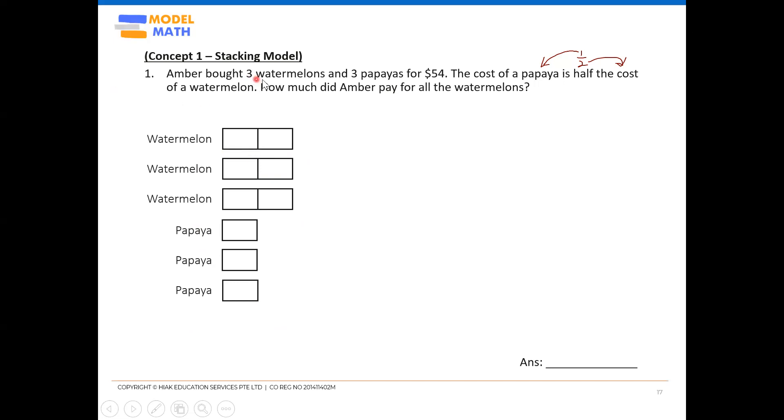Now, what I know so far is that these three watermelons, three papayas, total cost is $54. So we can indicate that on the model.